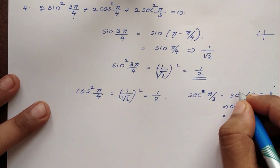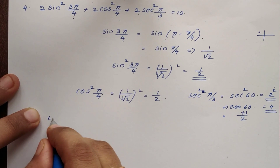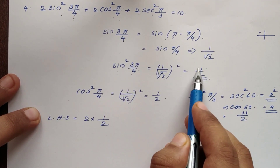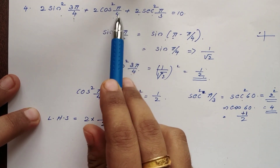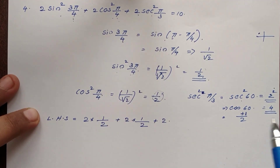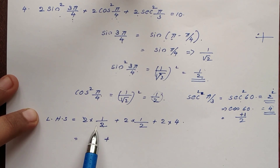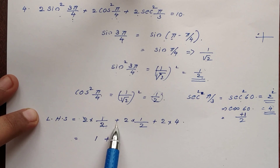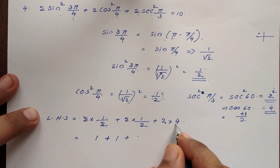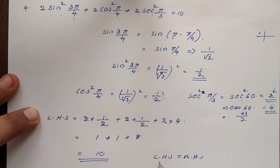So this is square, giving us sec²(π/3) equals 4. LHS equals 2 into sin²(3π/4) which is 1 by 2, plus 2 into cos²(π/4) which is 1 by 2, plus 2 into sec²(π/3) which is 4. This equals 1 plus 1 plus 8, which is equal to 10. That is LHS is equal to RHS.